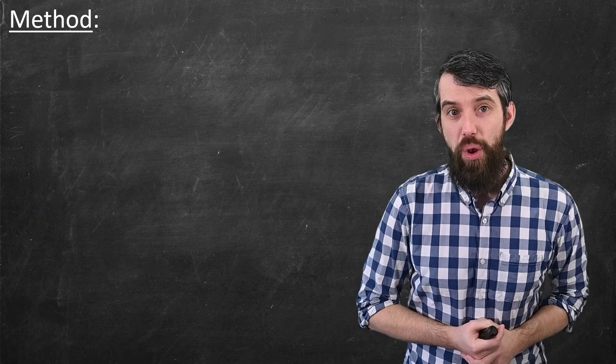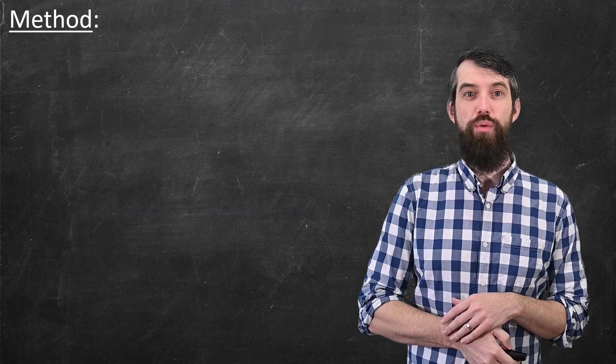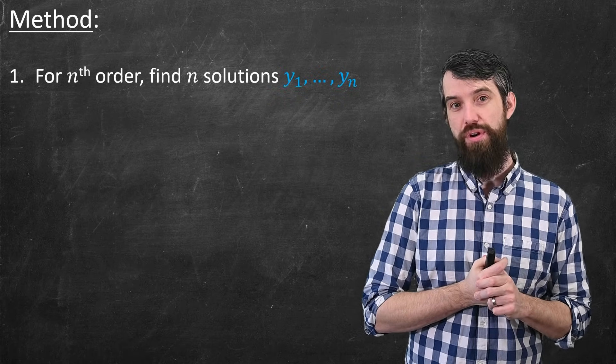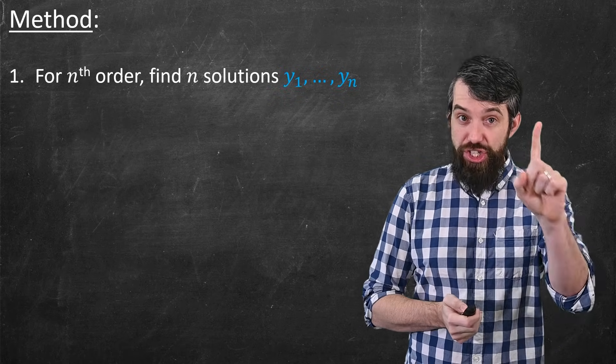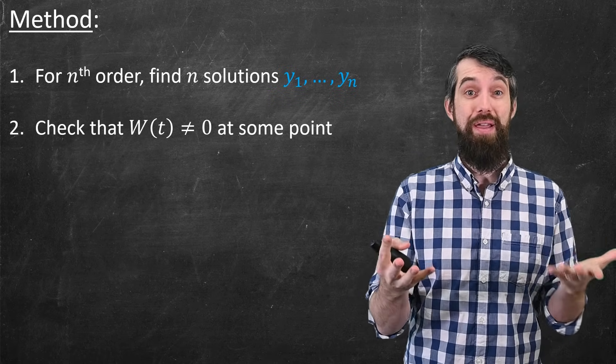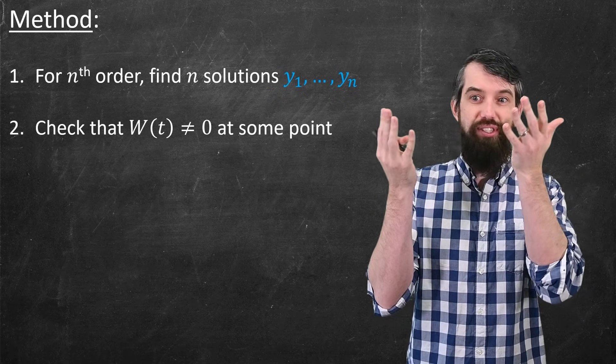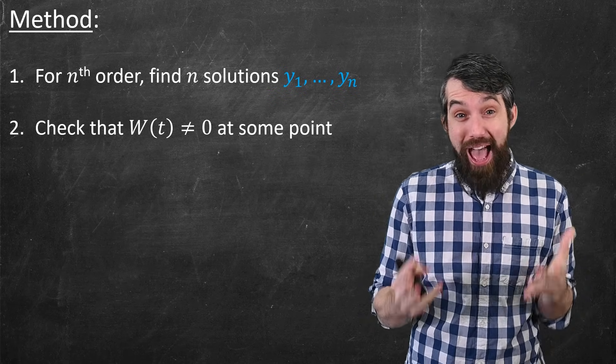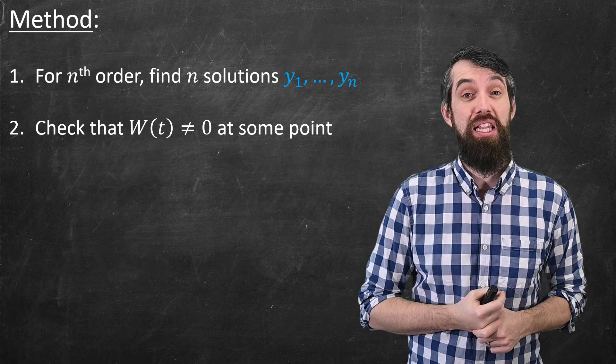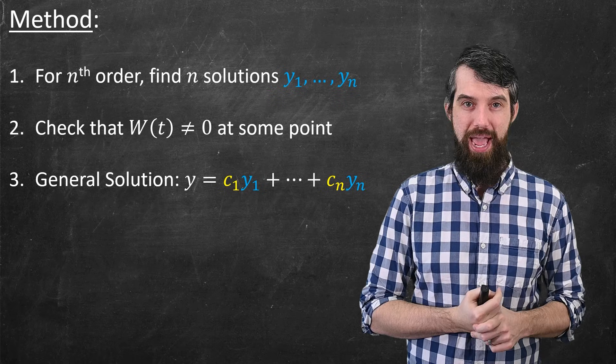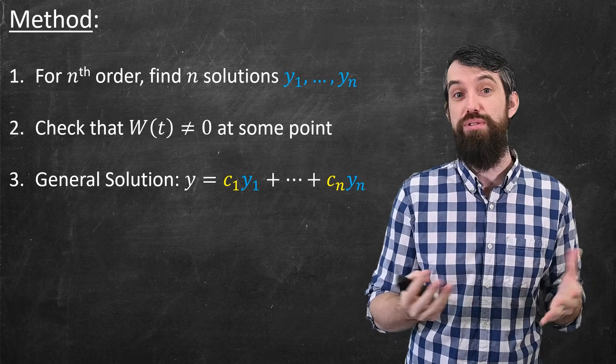So this gives us the following method. If I'm trying to solve an nth order differential equation, what I do is first, I need to find n solutions to that nth order differential equation. Then I need to check that indeed those n solutions are linearly independent, which we have a test for. You take the Wronskian, you see whether it's non-zero at some point in the relevant intervals. And then if you have that, you're done. You can just go to the general solution immediately. It's the linear combinations of the y1 down to the yn. That's your general solution.